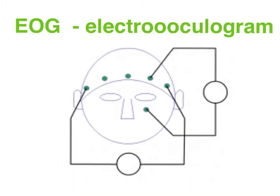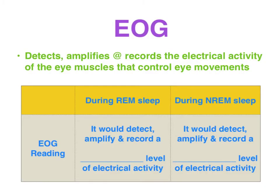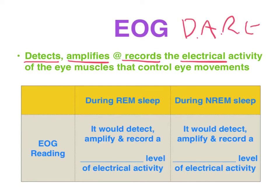Moving on to an EOG — electrooculogram. 'Gram' meaning measure, 'electro' meaning electrical activity, 'ocular' meaning eyes. Note the placement of the electrodes just under the eye on those eye muscles that control eye movements. Make sure when you provide an explanation of an EOG that you use the DARE acronym: it detects, amplifies and records the electrical activity of the eye muscles that control eye movements.